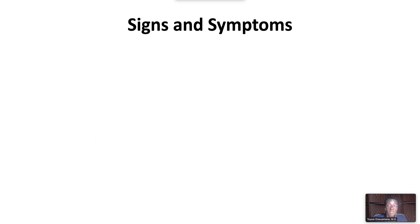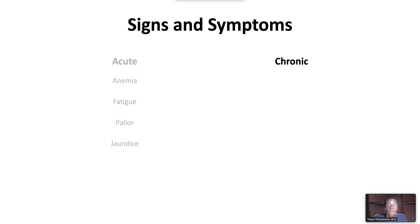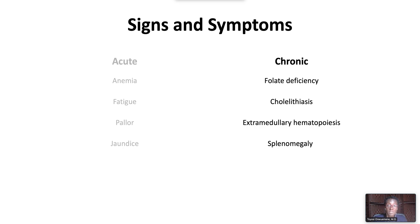Signs and symptoms depend on whether the hemolysis is acute or chronic. Acute signs and symptoms include anemia, fatigue, pallor, and jaundice. Chronic signs and symptoms include folate deficiency, cholelithiasis, and extramedullary hematopoiesis, which typically presents as splenomegaly.